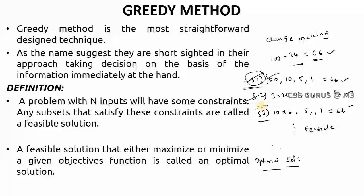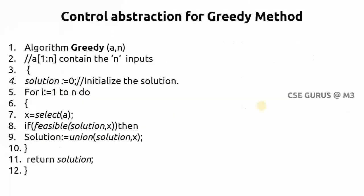Here in greedy method, we need to remember you will have more than one solution. Every solution you call it as feasible. Among the feasible, one solution will be optimal solution which either maximizes or minimizes.